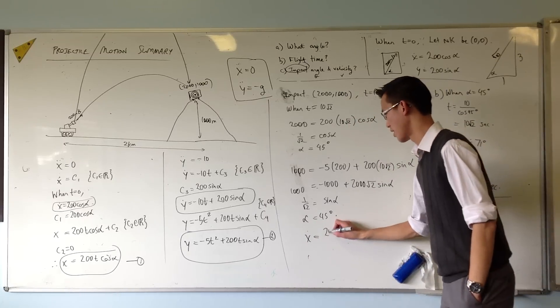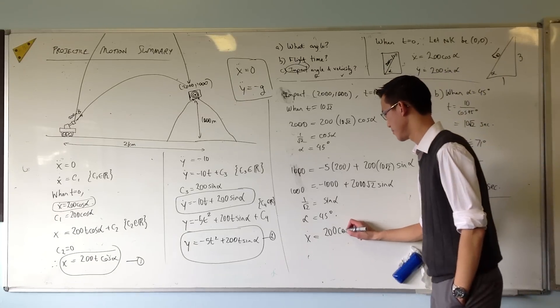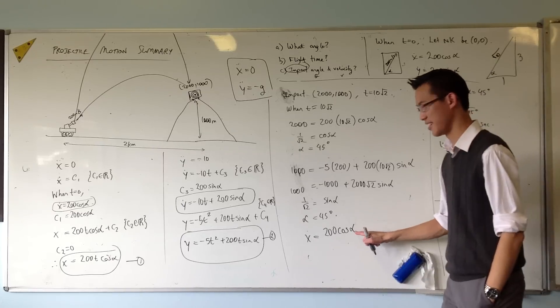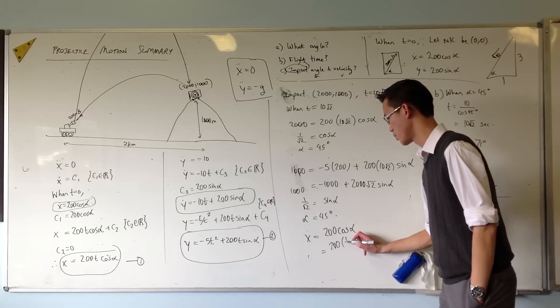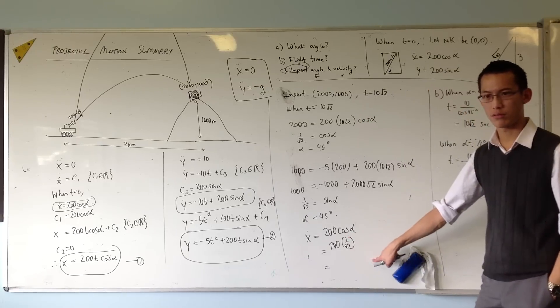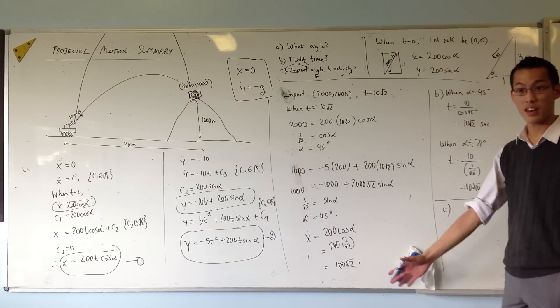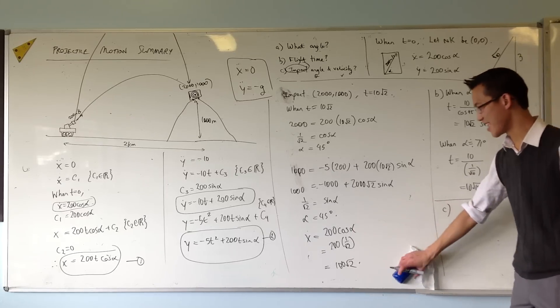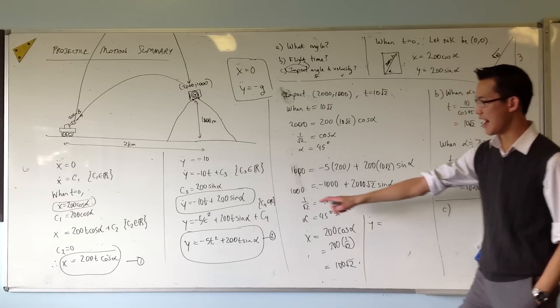X dot equals 200 cos 45, which is 200 times 1 on root 2, that's 200 on root 2, which is 100 root 2. This is x dot. So I should probably take it to y dot as well. I know what time is, I know what alpha is.